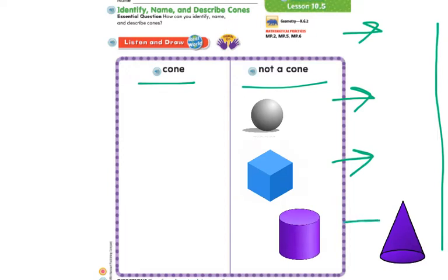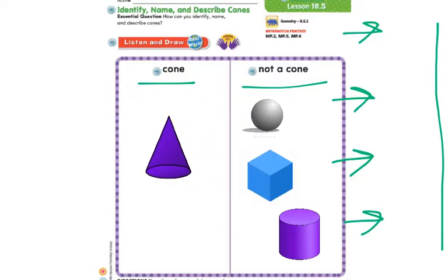Last but not least, what shape is this? We have found our cone. We see a flat surface, we see a curve, and our point. Okay, let's move on.